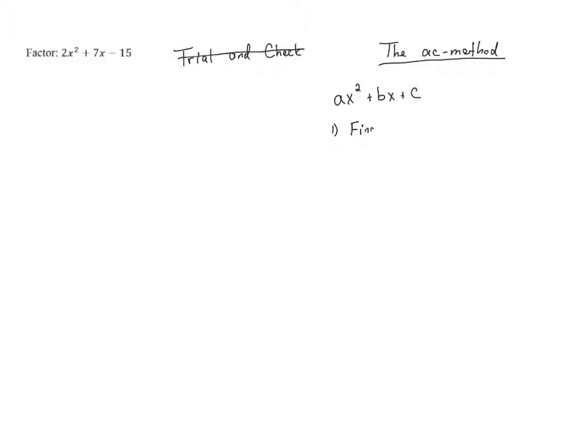So the first step is to find the product AC, A times C. That's why it's called the AC method because we're looking for the product A times C. It ends up being an important number in the calculations.